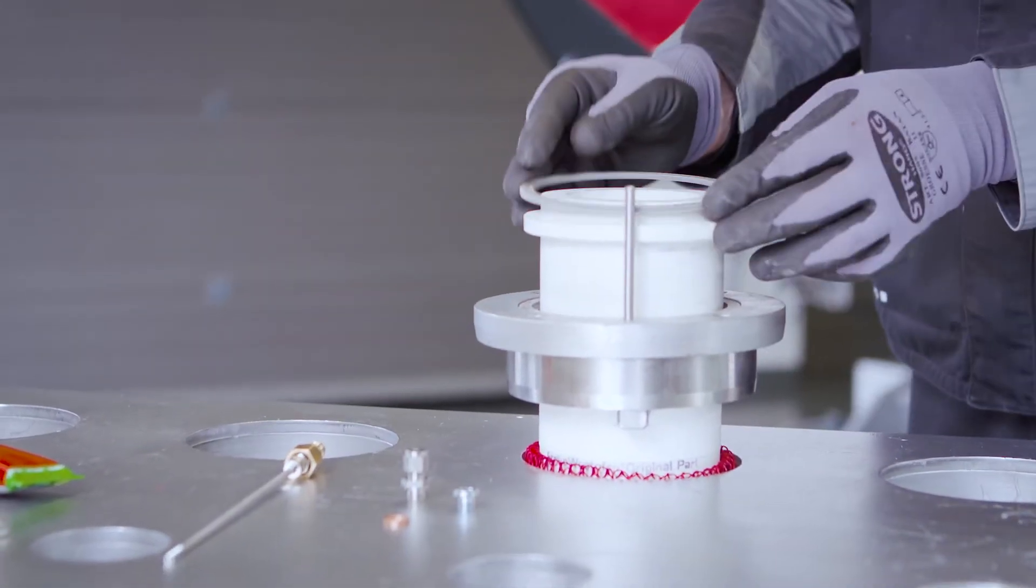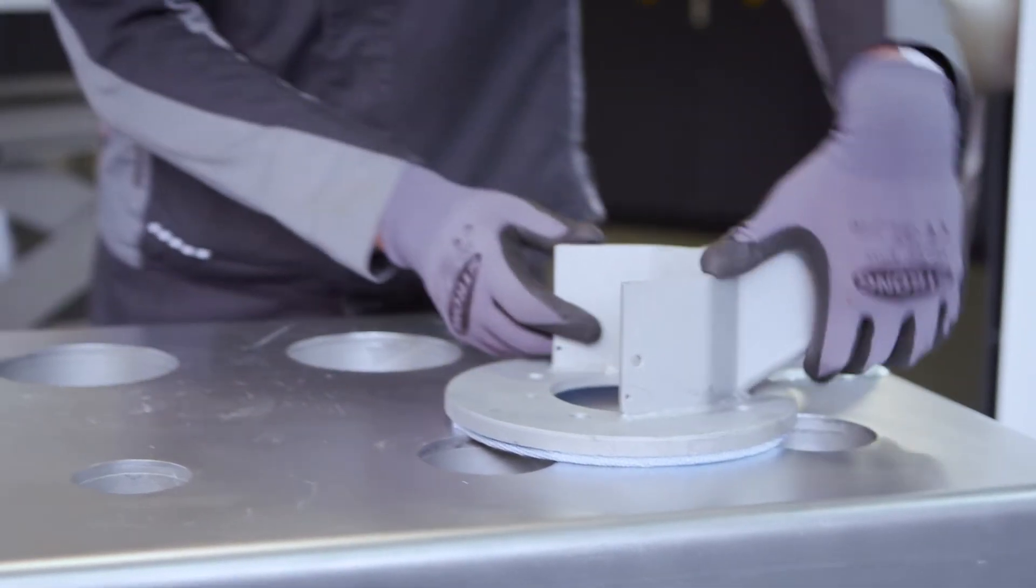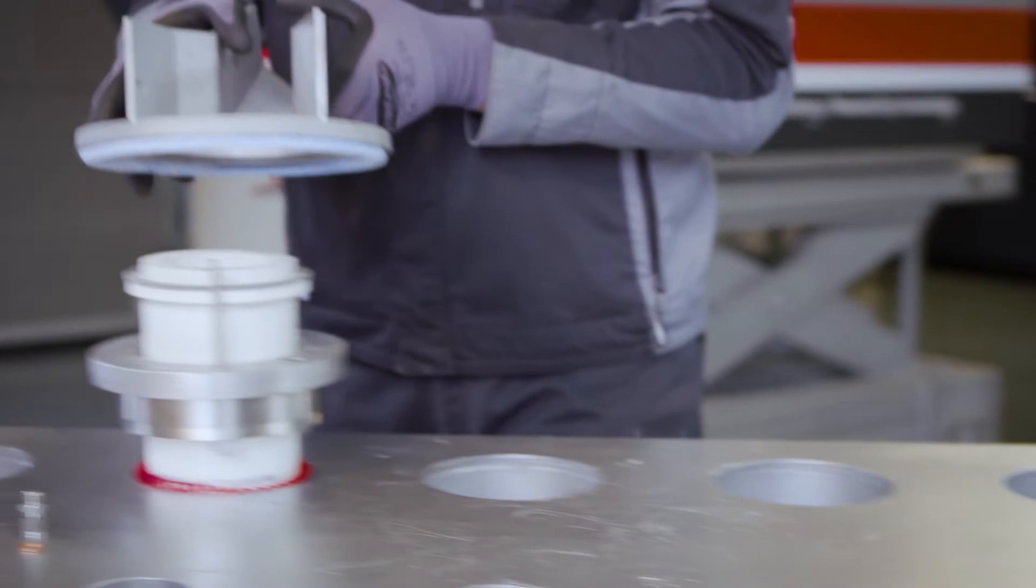Now you place the second mica gasket on the riser tube. After that, the riser tube steel insert can be put on.